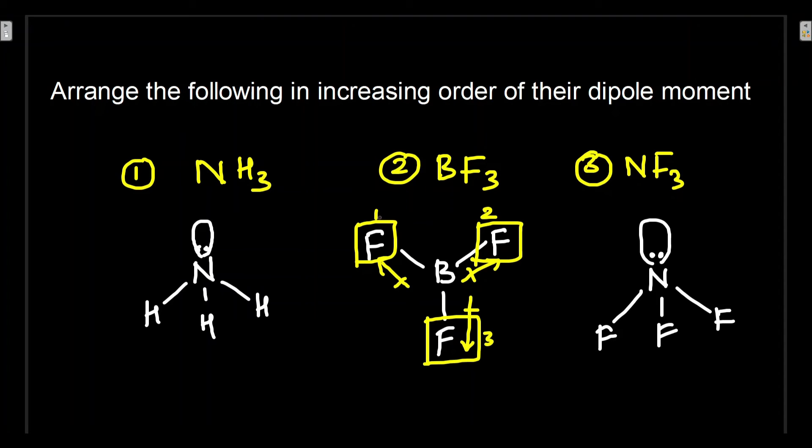If I call this fluorine as one and two, this as three, resultant dipole moment due to fluorine number one and two will be equal to dipole moment due to fluorine number three. So overall dipole moment will be zero because they are in opposite direction.